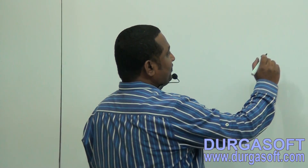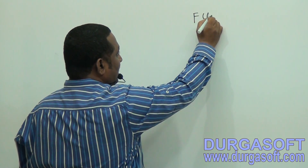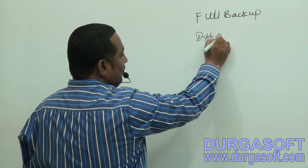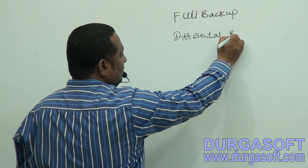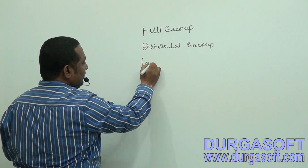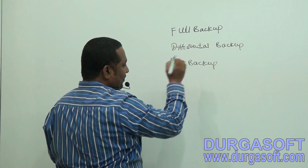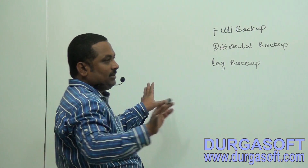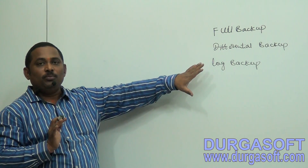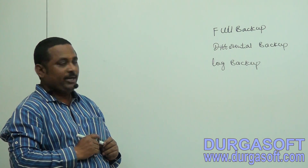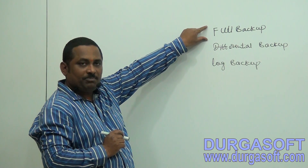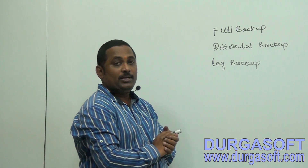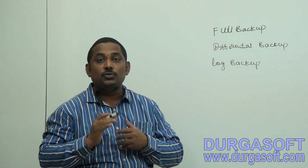Coming to the next scenario, for example, we are working with a production database. For this production database, we have taken a full backup, then a differential backup, and after that a log backup. So we have three backups: full backup, differential backup, and log backup. Now we lost our database, so what do we do? We have to recover our database from these backups. When we are going to perform a restore operation, we have to follow restore modes.